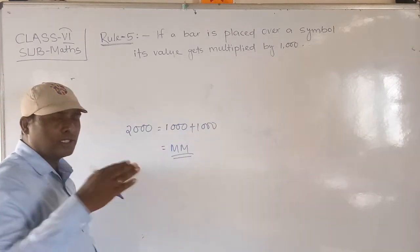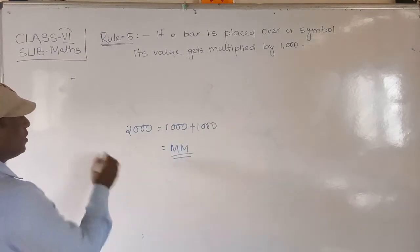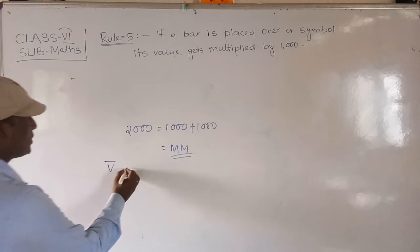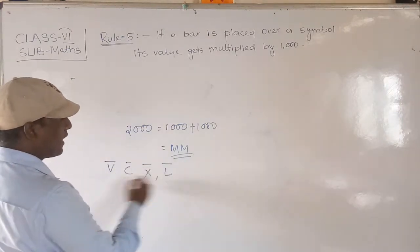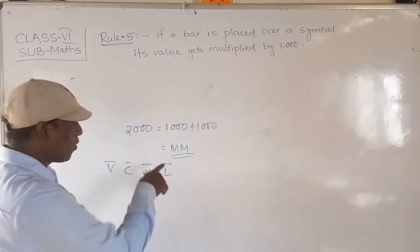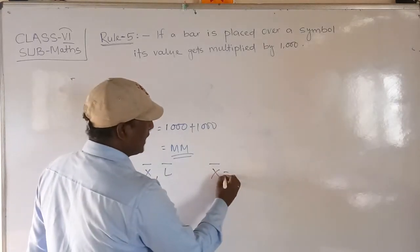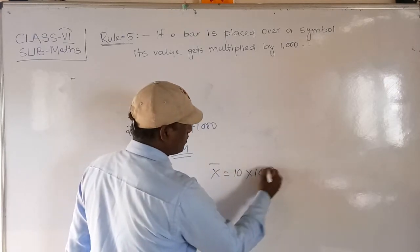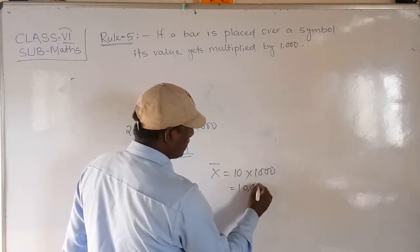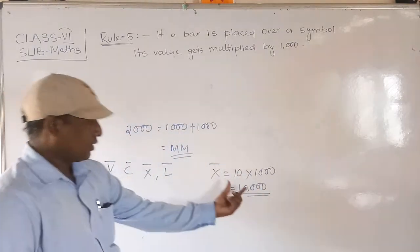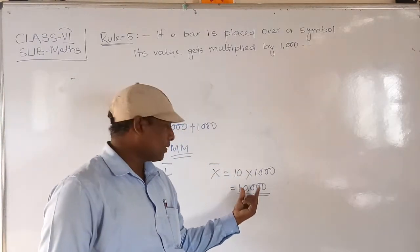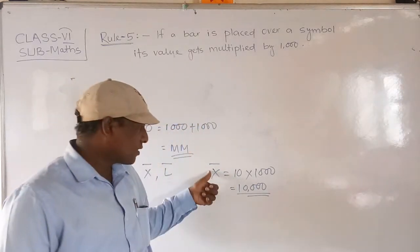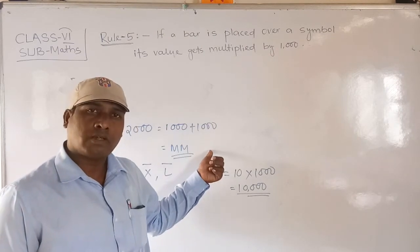But whenever you are writing 5000, 10,000, 30,000, or similar large values, you use the bar notation — V-bar, C-bar, X-bar, L-bar, and so on. For example, X-bar means X = 10, multiplied by 1000, equals 10,000. So for the Hindu-Arabic number 10,000, in Roman numerals you write X-bar. Are you clear?